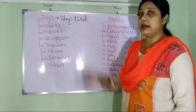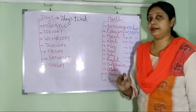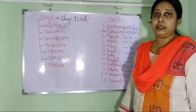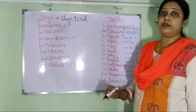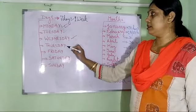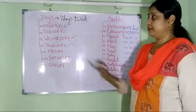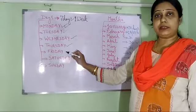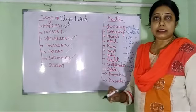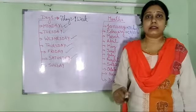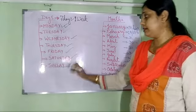Monday is the first day of the week. The second day will be Tuesday. Tuesday is the second day. Wednesday is the third day of the week. Thursday is the fourth day of the week. Friday is the fifth day of the week. Saturday is the sixth day of the week.